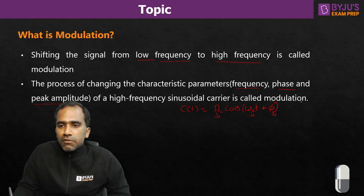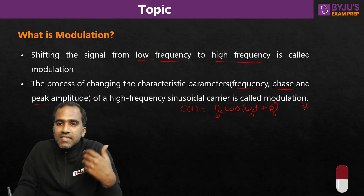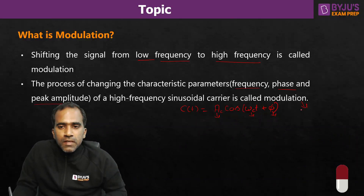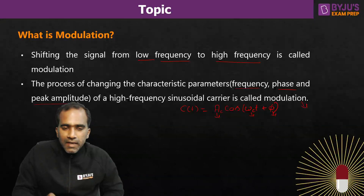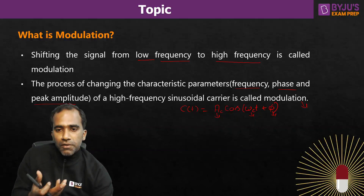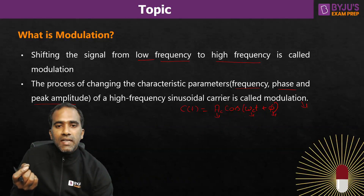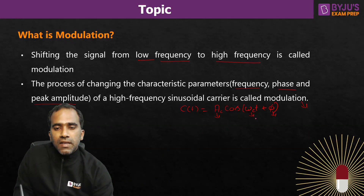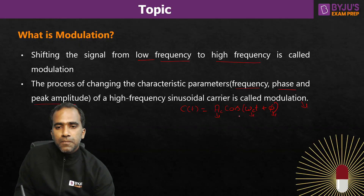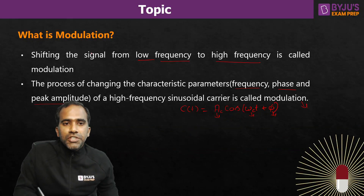The dictionary meaning of modulation is modification — changing something. Here also we are exactly following that meaning. What exactly are we modulating? We are modulating a high frequency carrier signal. Why do we modify or modulate a high frequency carrier signal? Because we want to shift the signal from low frequency to high frequency.